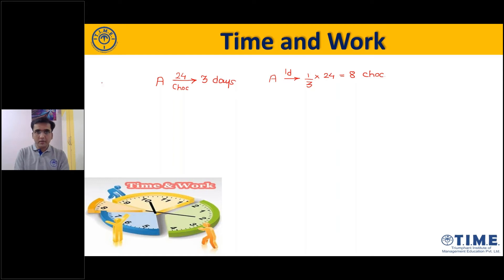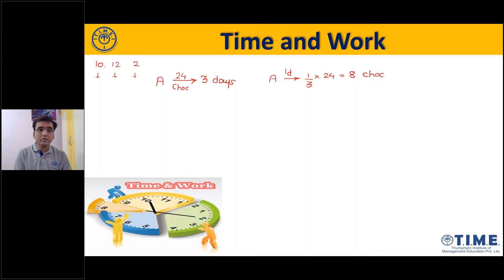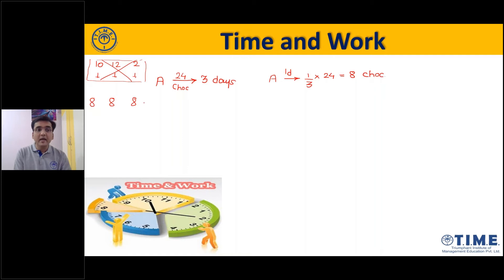There is a little confusion in some students' minds. If I tell you that in three days he finished 24 chocolates, it could be that on the first day he ate 10, the second day 12, and the third day 2 — that's also 24. But remember, in aptitude time and work questions, you have to assume per day work is constant. If someone says 24 chocolates are finished in 3 days, then per day he ate 8, 8, and 8.